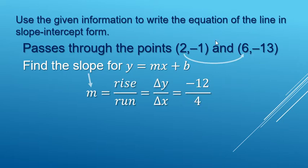If you need more help with slope, click the card up here at the top. We can do division to clean this up even more. Negative 12 divided by 4 is negative 3.